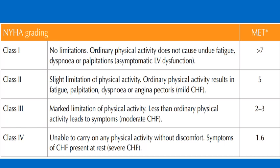Now coming to NYHA grading of dyspnea — the New York Heart Association grading — which is given for patients who are having heart failure. Class 1 dyspnea is also called asymptomatic LV dysfunction, or compensated heart failure. In NYHA grade 1, there are no limitations and ordinary physical activity does not cause undue fatigue, dyspnea, or palpitations. This patient has asymptomatic LV dysfunction and the metabolic equivalent capacity is more than 7.